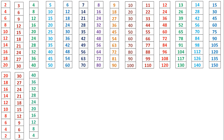4 times 10 is 40, 4 times 9 is 36, 4 times 8 is 32, 4 times 7 is 28, 4 times 6 is 24, 4 times 5 is 20, 4 times 4 is 16, 4 times 3 is 12, 4 times 2 is 8, 4 times 1 is 4.